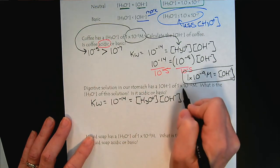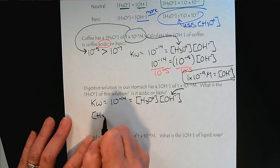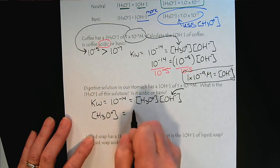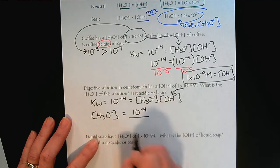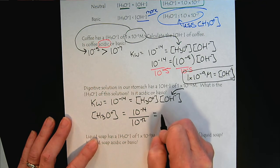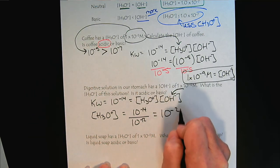However, this time we've been given the hydroxide. So our hydronium concentration will be 10 to the minus 14 divided by 10 to the minus 12. So that would give us 10 to the minus 2 molar.